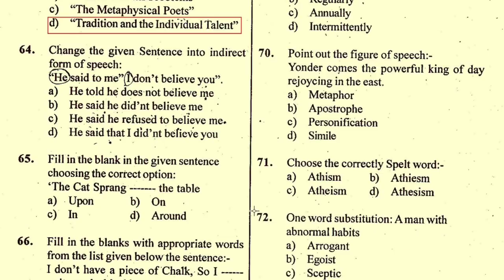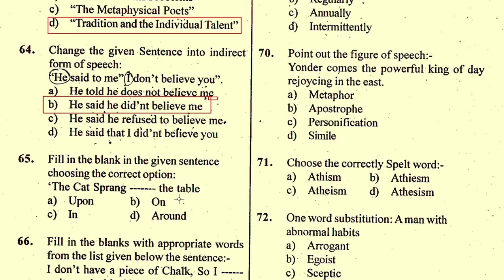Question number 64: Change the given sentence into indirect form of speech. The correct indirect form is: 'He told me that he didn't believe me,' or 'He said he didn't believe me.' Option B is correct. Question number 65: Fill in the blank — 'The cat sprang ___ the table.' The right preposition is 'upon', so option A is correct.